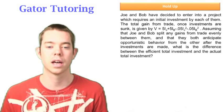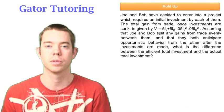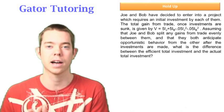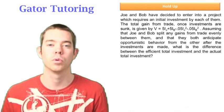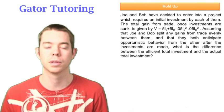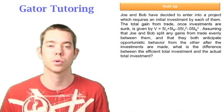So they just told us that they anticipate opportunistic behavior from the other, which goes ahead and tells us that the actual total investment is going to be with the holdup problem. And then the efficient total investment, of course, is without the holdup problem. So we're going to be looking at the difference between those two numbers.